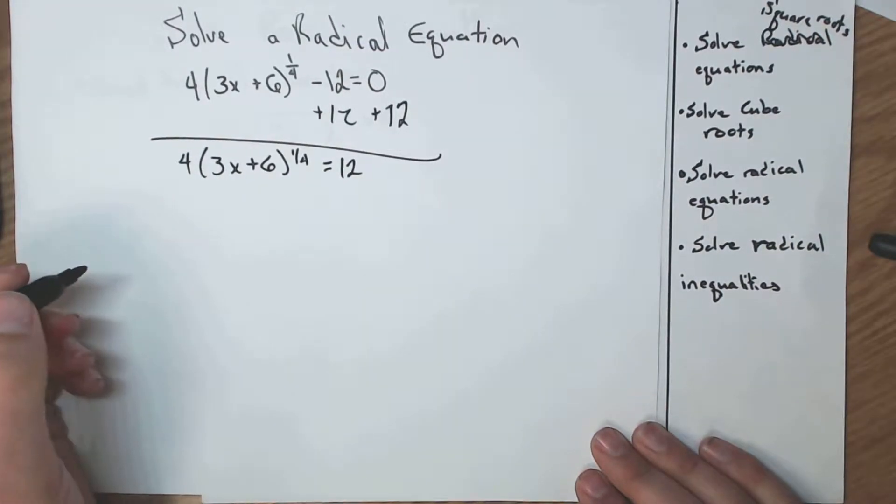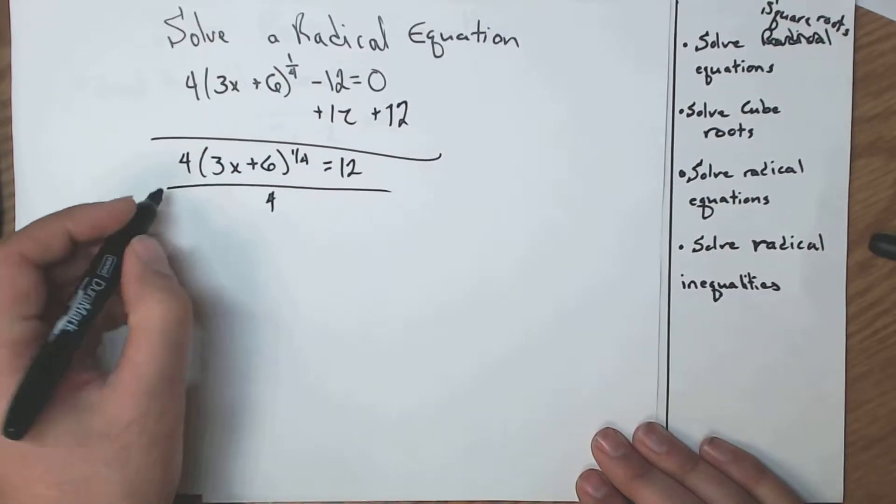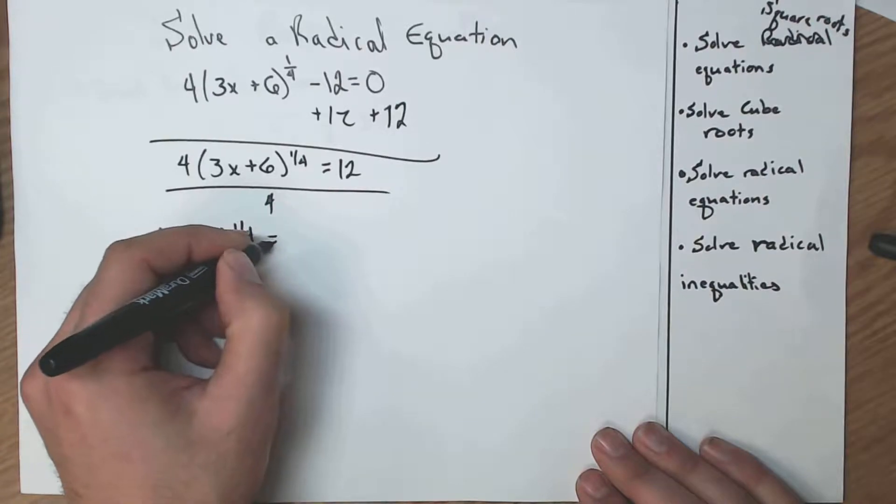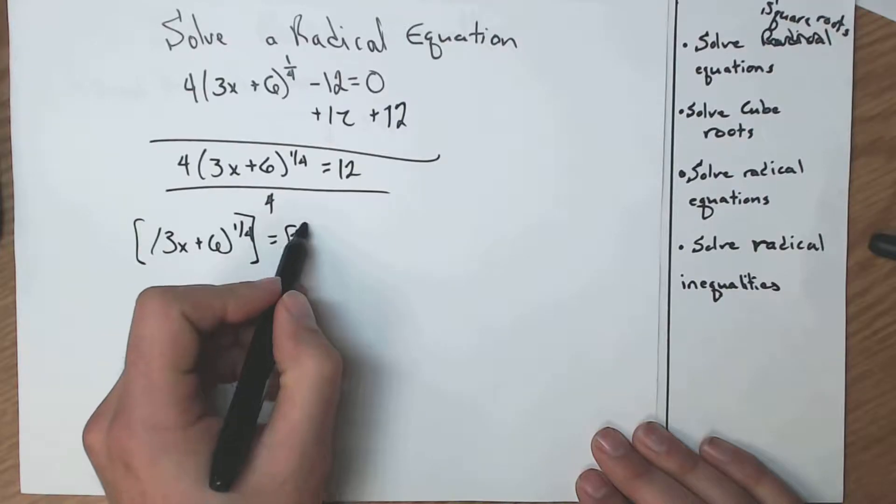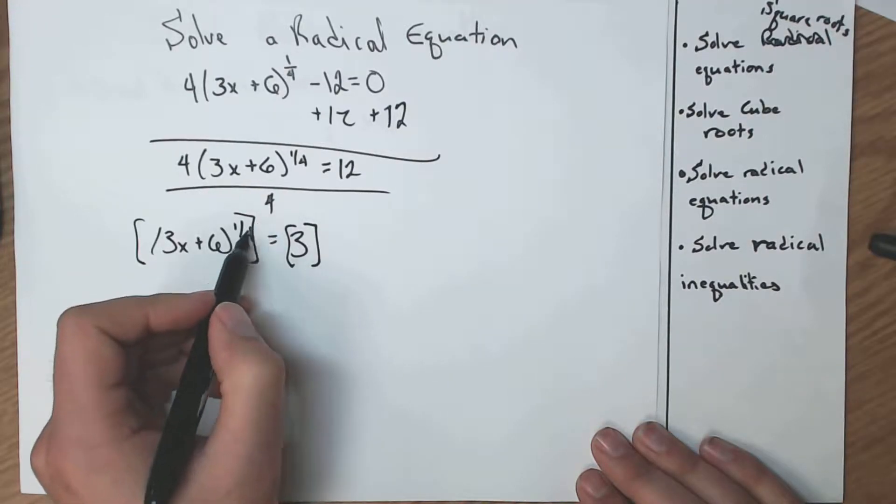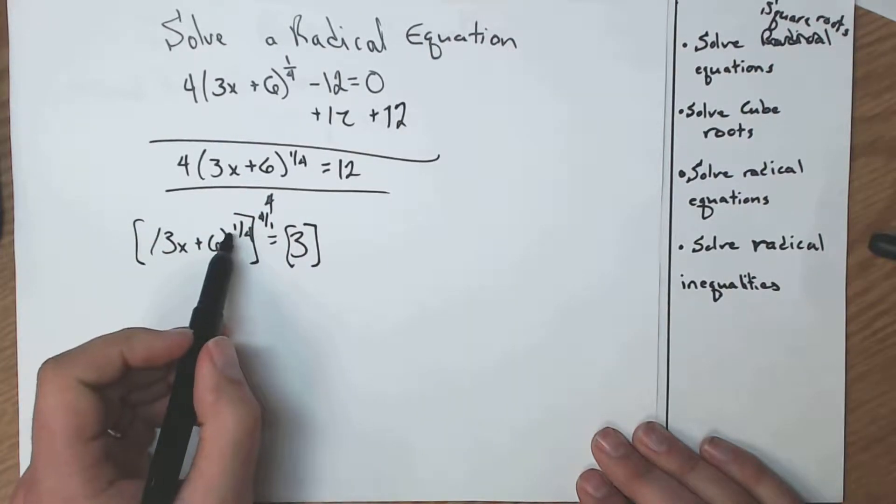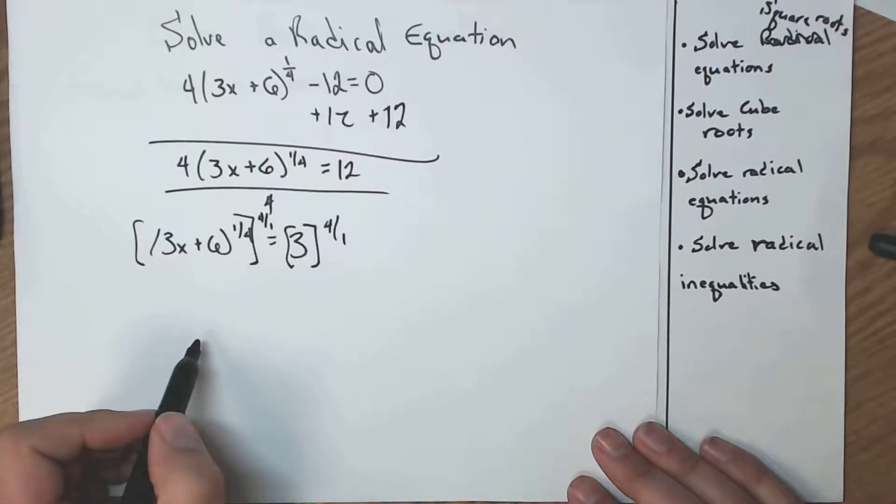Now what do I do? Well, I still have to isolate my square root, so I'm going to divide by, on both sides, the 4. 3x plus 6 to the 1 fourth equals 12 divided by 4 is a 3. And just like last time, I'm going to take both sides and raise it to the reciprocal. In this case, it's a 1 fourth, so I'm raising it to the 4 over 1. If that was a 3 fourth, I'd raise it to the 4 over 3. So it's the same principle no matter what this is.